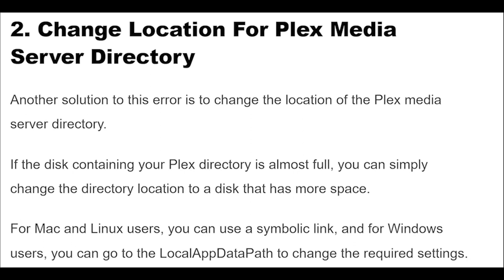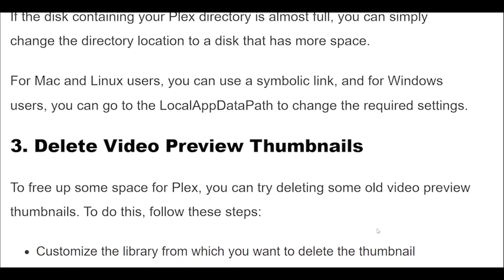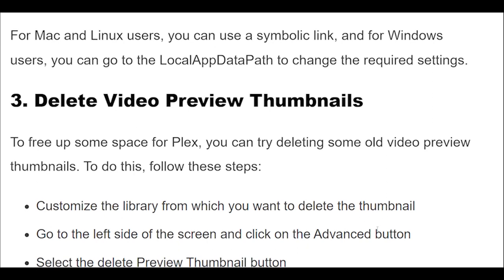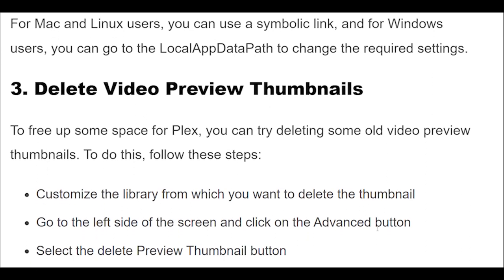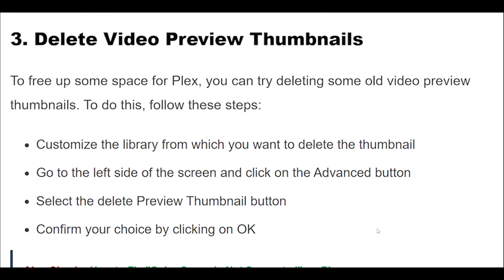Another solution to this error is to change the location of the Plex media server directory. If the disk containing your Plex directory is almost full, you can simply change the directory location to a disk that has more space. For Mac and Linux users, you can use a symbolic link, and for Windows users, you can go to the local app data path to change the required settings.